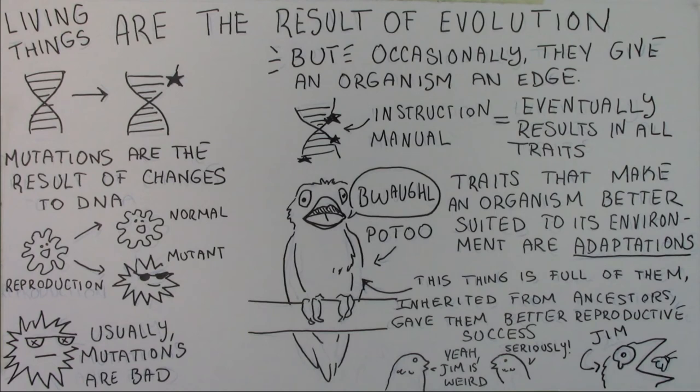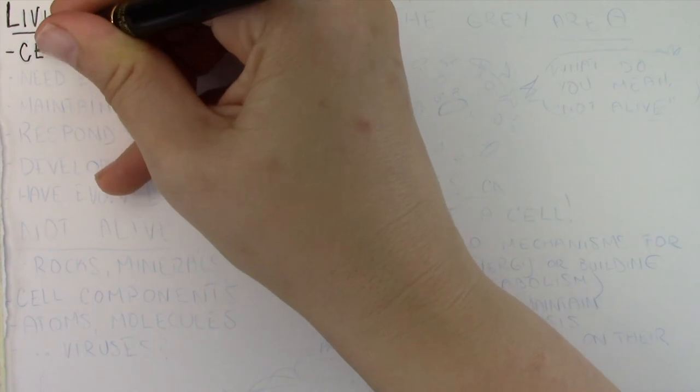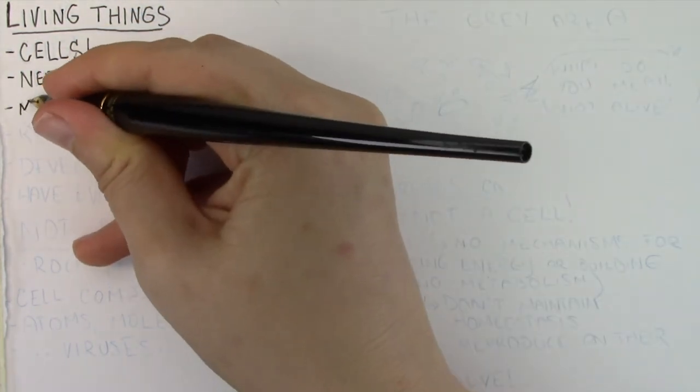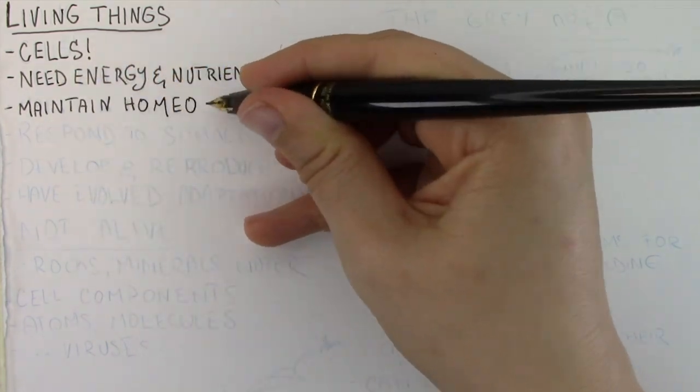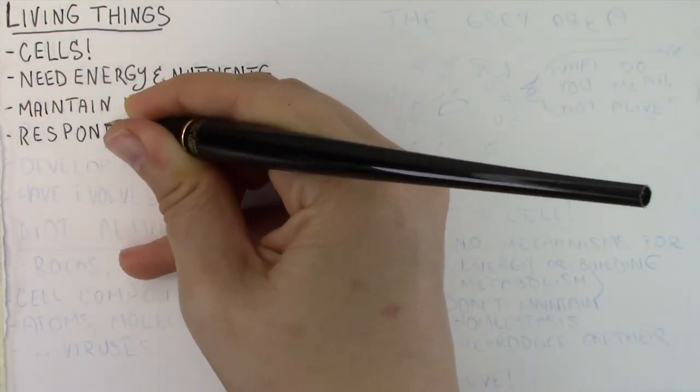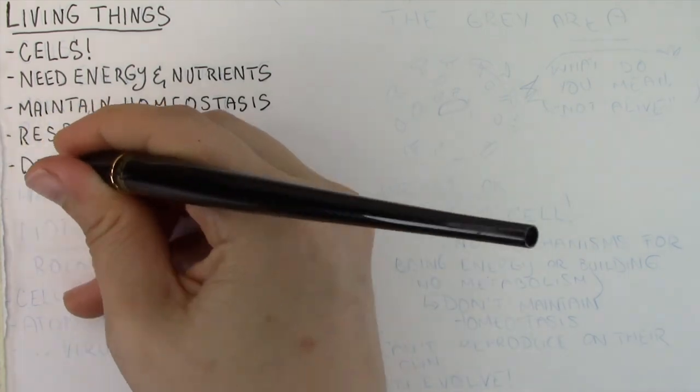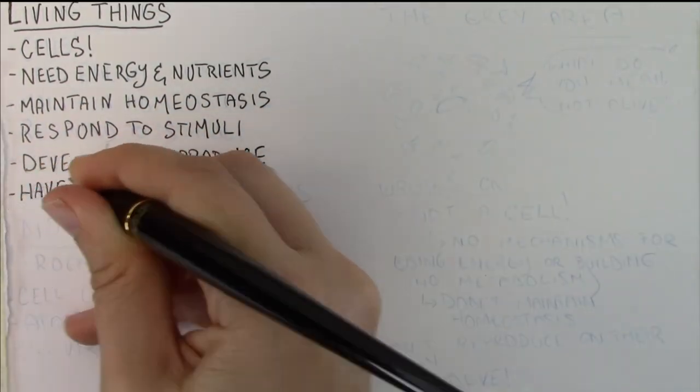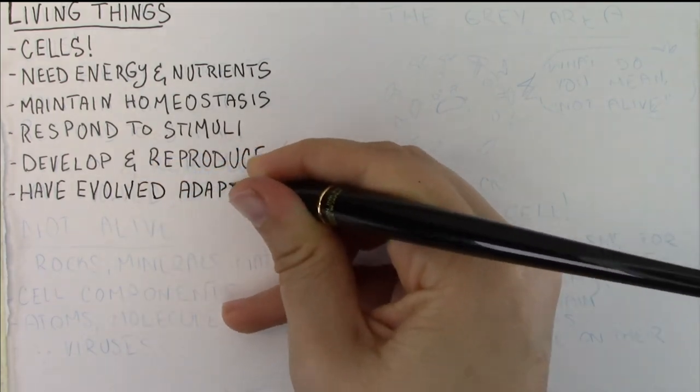So to be clear, many of the topics I introduced today were generalizations, and we'll explore them in much greater detail as we go throughout the semester. But basically, to be a living organism, you have to have cells, at least one of them, you usually use energy and nutrients, you maintain homeostasis, you respond to stimuli and have behavior, you develop and reproduce, and you are the product of evolution and have a number of adaptations that help you to survive.